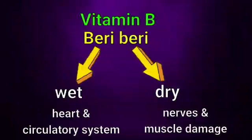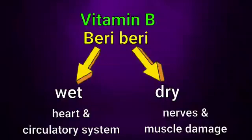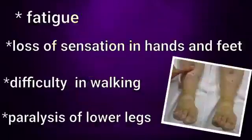Vitamin B deficiency is called beriberi. Vitamin B is actually a group of vitamins, whereas beriberi is specifically caused due to thiamine or vitamin B1. Beriberi is of two types: wet and dry. In wet beriberi, the heart and circulatory system are affected, whereas in dry beriberi it affects the nerves and also damages the muscles.